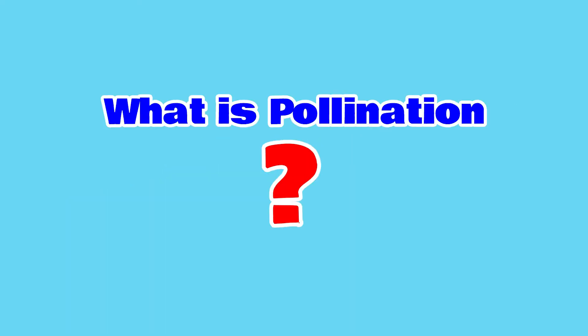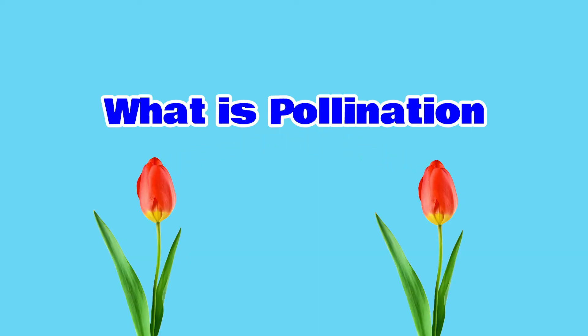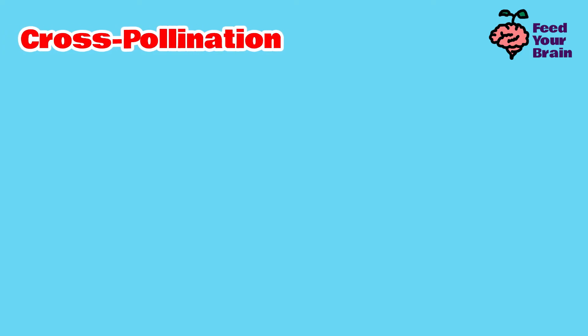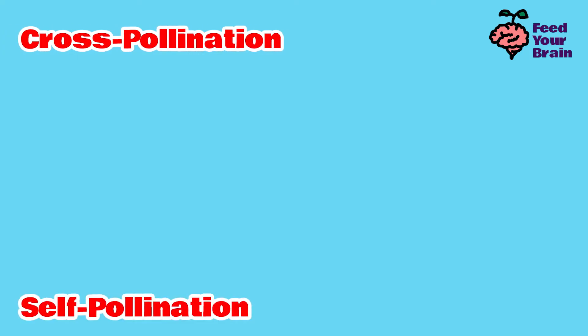What is pollination? How do plants create seeds, which then reproduce into more plants? This is through pollination. There are two types: cross-pollination and self-pollination.